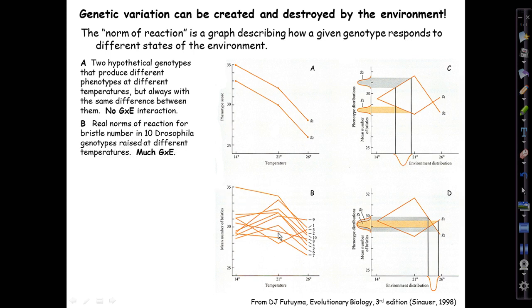In B, we have real norms of reaction for 10 different inbred Drosophila genotypes that were raised at different temperatures, on which all of these cases, real and imagined, are modeled. And here there's a lot of genotype by environment interaction because some genotypes behave like those in panel A—this one here, which is the model for both of them, being always more bristles at lower temperatures—but others go the other way, or have the highest number or the lowest number at intermediate temperatures. They're all over the place. There's a lot of genotype by environment interaction because different genotypes respond differently to states of the environment.